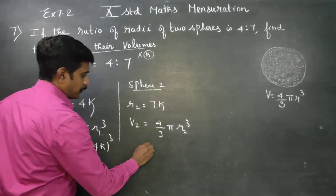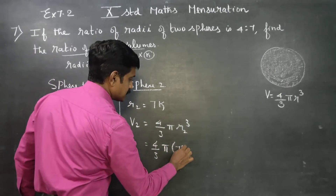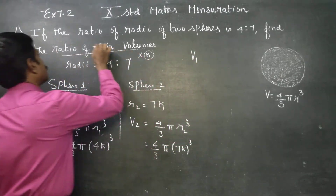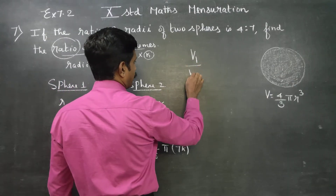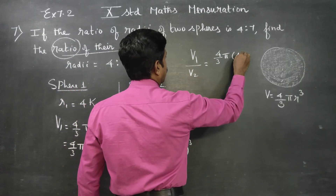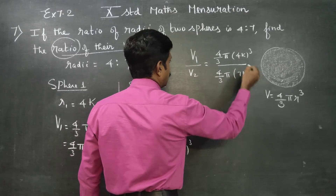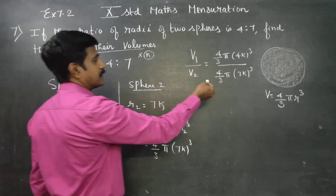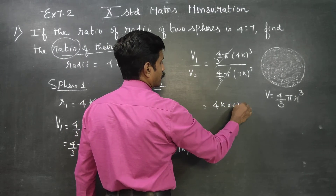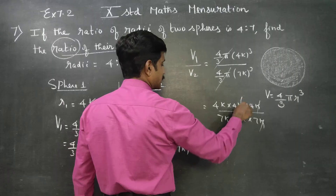Let the radii be r1 = 4k and r2 = 7k. Volume is equal to 4 by 3 pi r cube. We multiply and the pi and the 4 by 3 terms cancel out fully. Now we have 4k cubed over 7k cubed. The k, k, k terms cancel out.